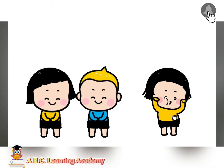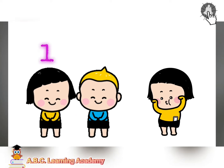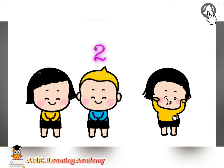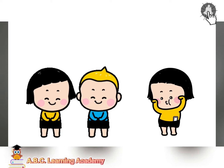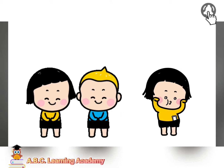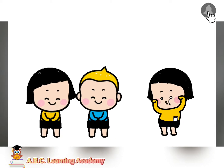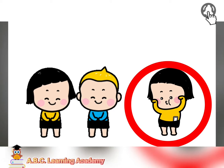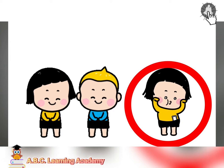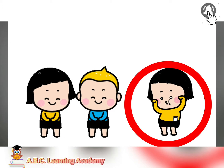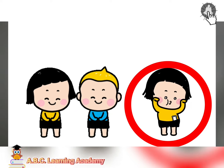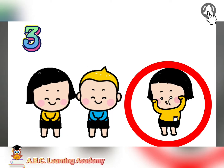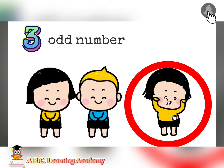Now, how many children are dancing in here? There are three children dancing, but there is one child dancing alone. She doesn't have any partner. Therefore, three is an odd number.